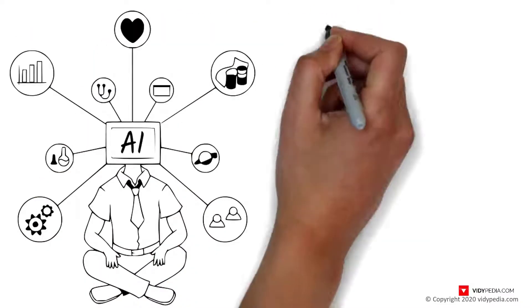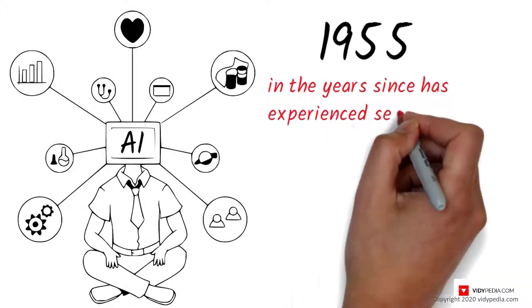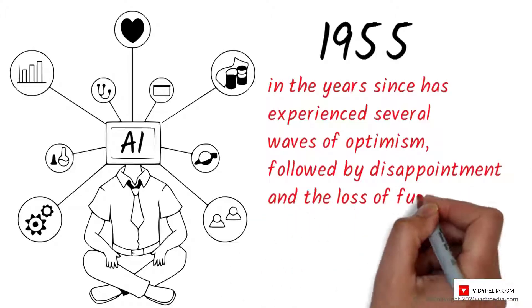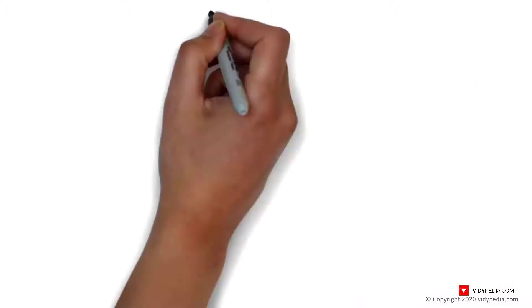Artificial intelligence was founded as an academic discipline in 1955, and in the years since has experienced several waves of optimism, followed by disappointment and the loss of funding, known as an AI winter, followed by new approaches, successes, and renewed funding.